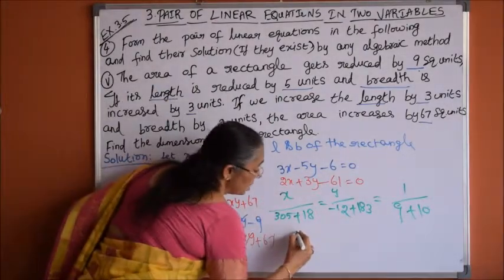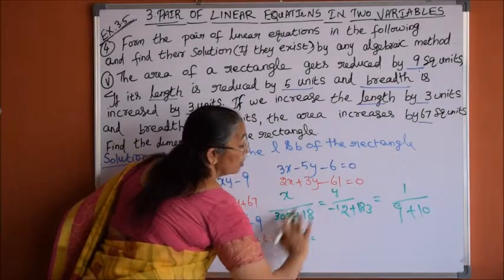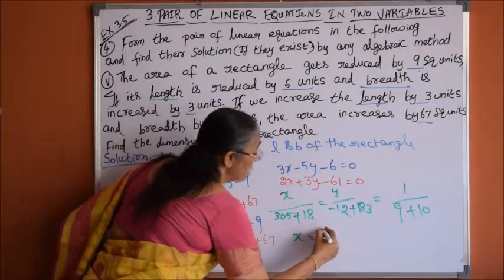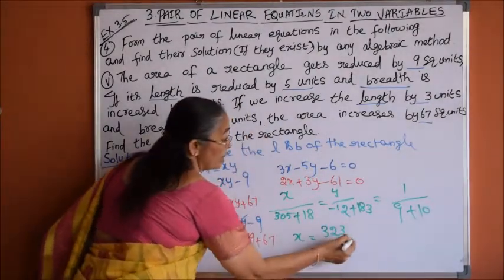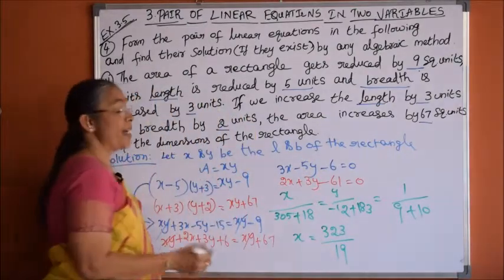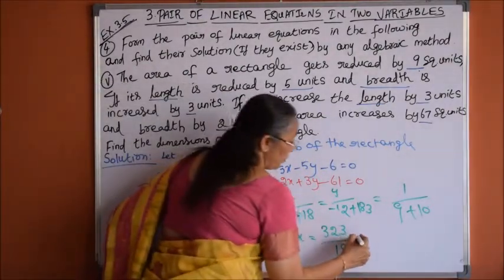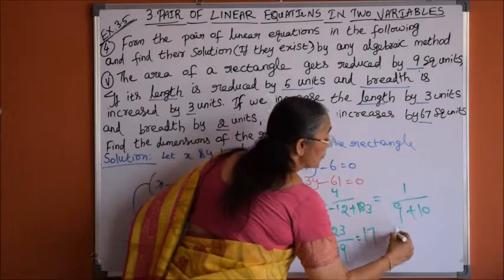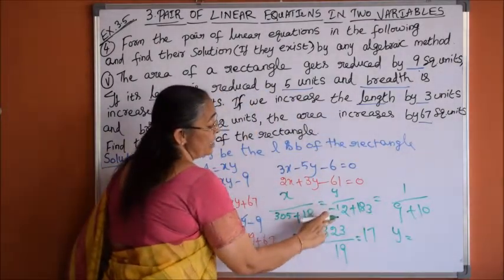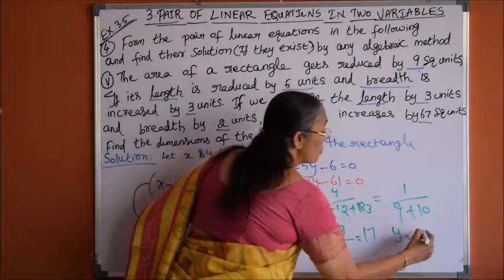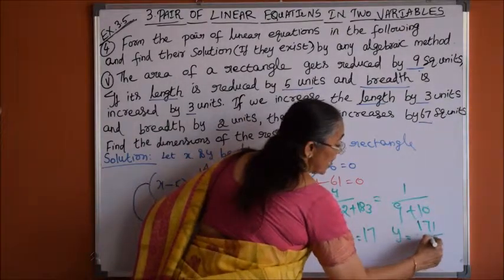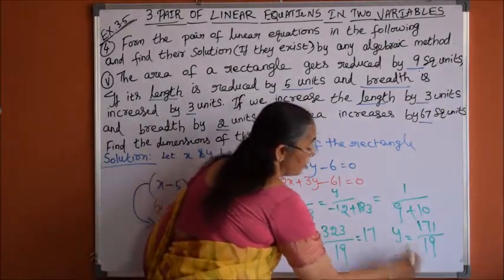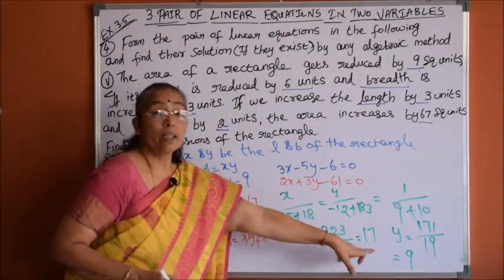So x equals 323 divided by 19, which is 17. And y equals 171 divided by 19, which is 9. Therefore x equals 17 and y equals 9.